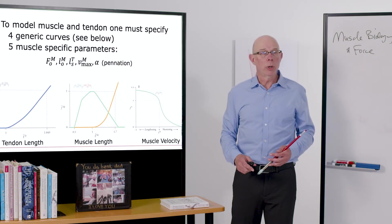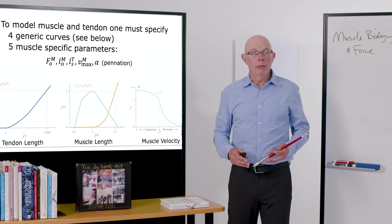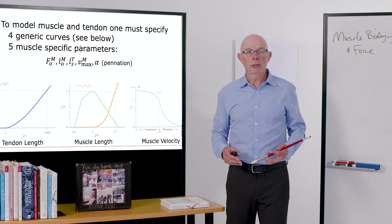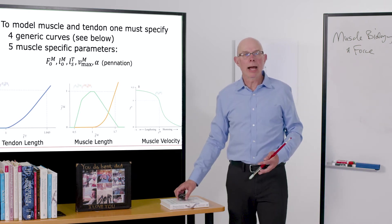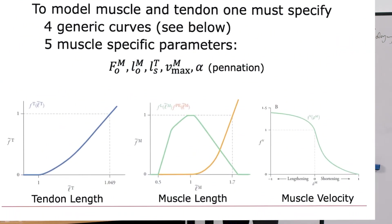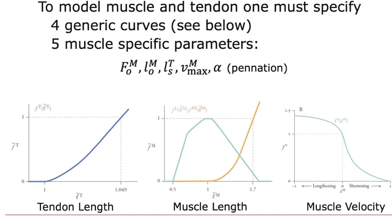In the next lecture, what we're going to do is model this muscle and tendon. To model generic muscle-tendon and to scale it to a specific actuator, we need four generic curves. Here they are. You'll get very used to them: the tendon force-length curve, active force-length curve of muscle, passive force-length curve of muscle, and the force-velocity curve of muscle.